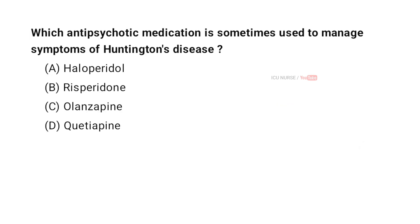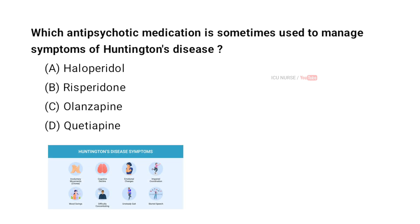Which antipsychotic medication is sometimes used to manage symptoms of Huntington's disease? A. Haloperidol. And the correct answer is A. Haloperidol.